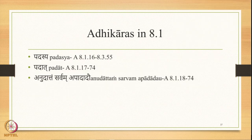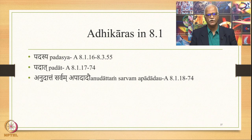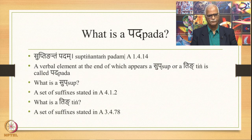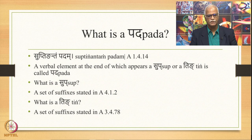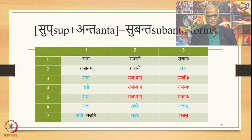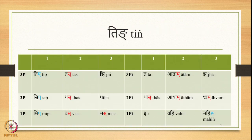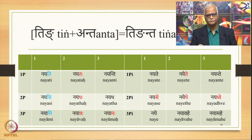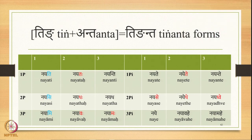Then we go to 8.1. The Adhikara is Padasya from 8.1.16 to 8.3.55. Then Pada from 8.1.71 to 7.4 (end), and Anadattam Sarvam Apadadav from 8.1.18 to 7.4. What is a Pada? Suptingantam Padam — a verbal element at the end of which appears a Sup or a Ting is called Pada. The Sup suffixes are stated in 4.1.2, and the Ting suffixes in 3.4.78. The Subanta forms are called Padas, and the Tinganta forms — also 18 suffixes — are also known as Pada by definition.